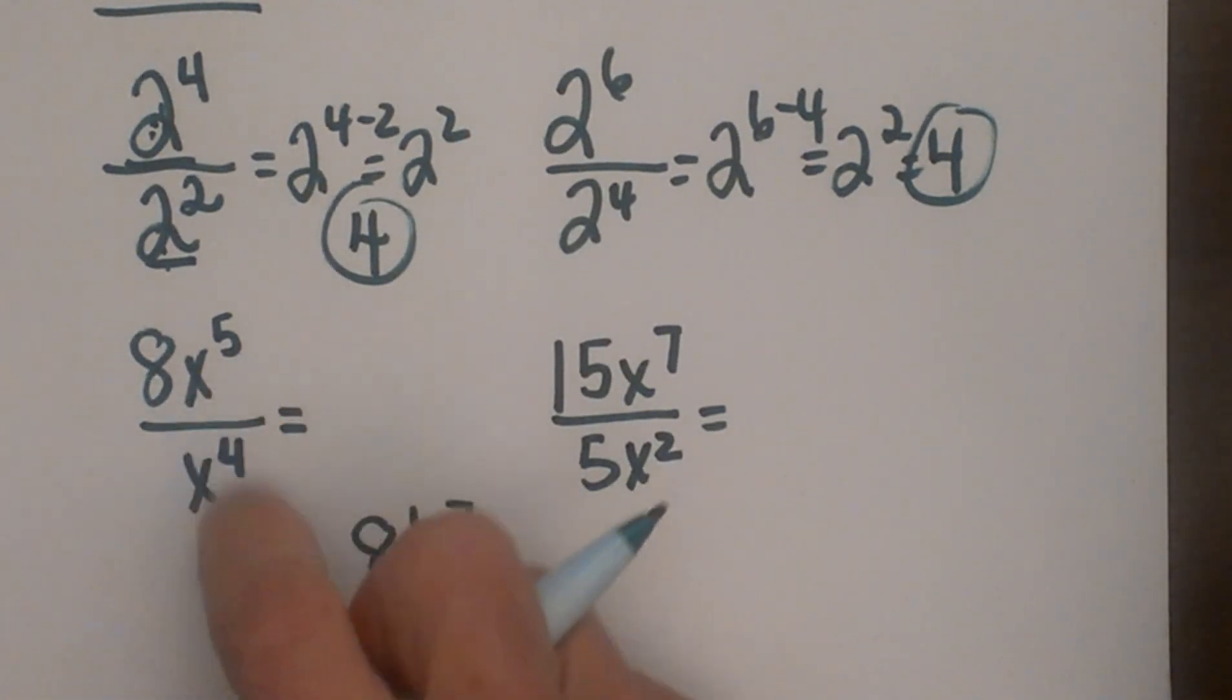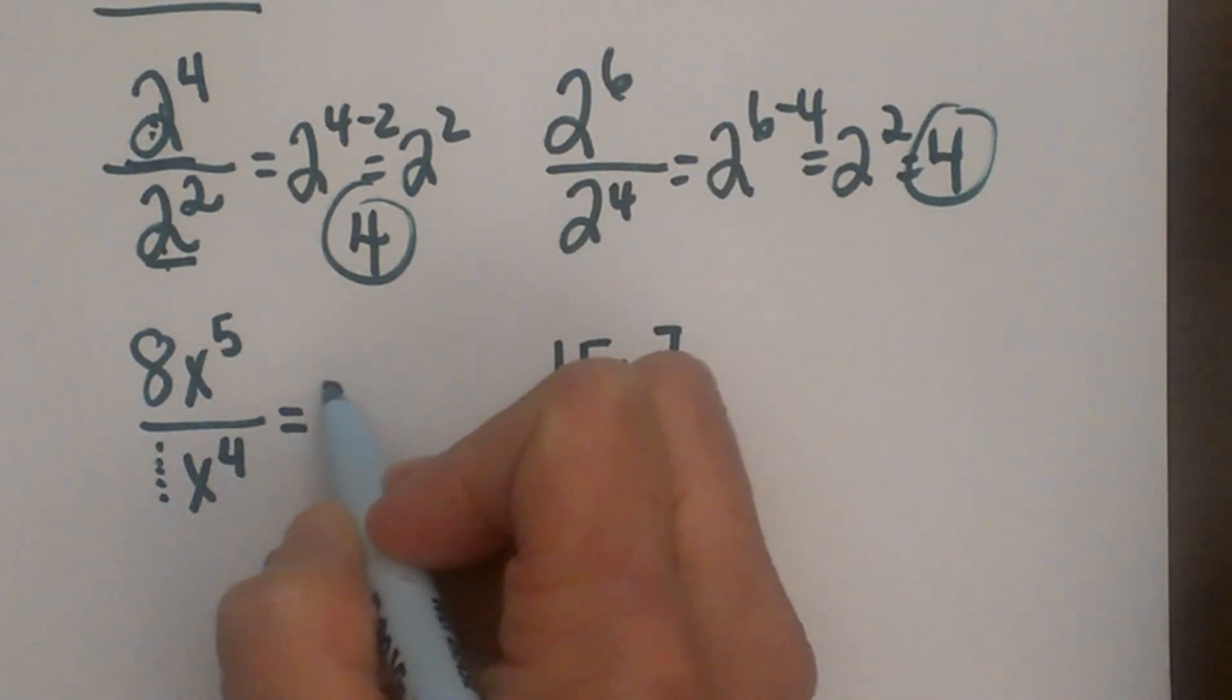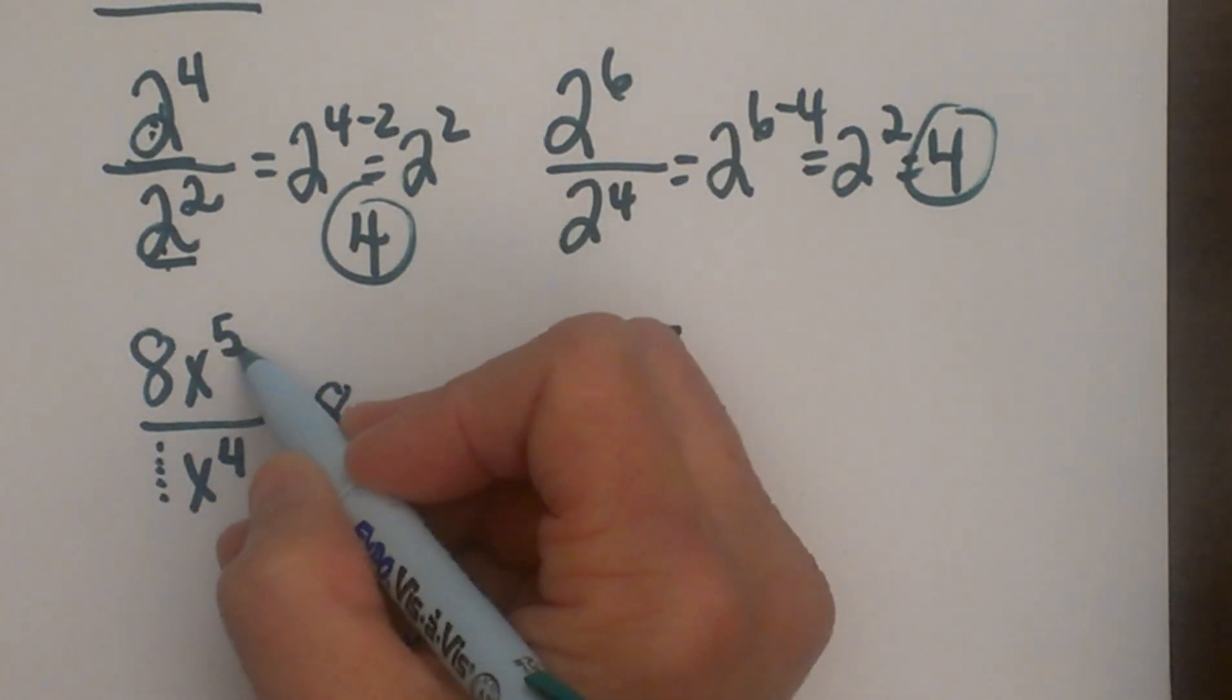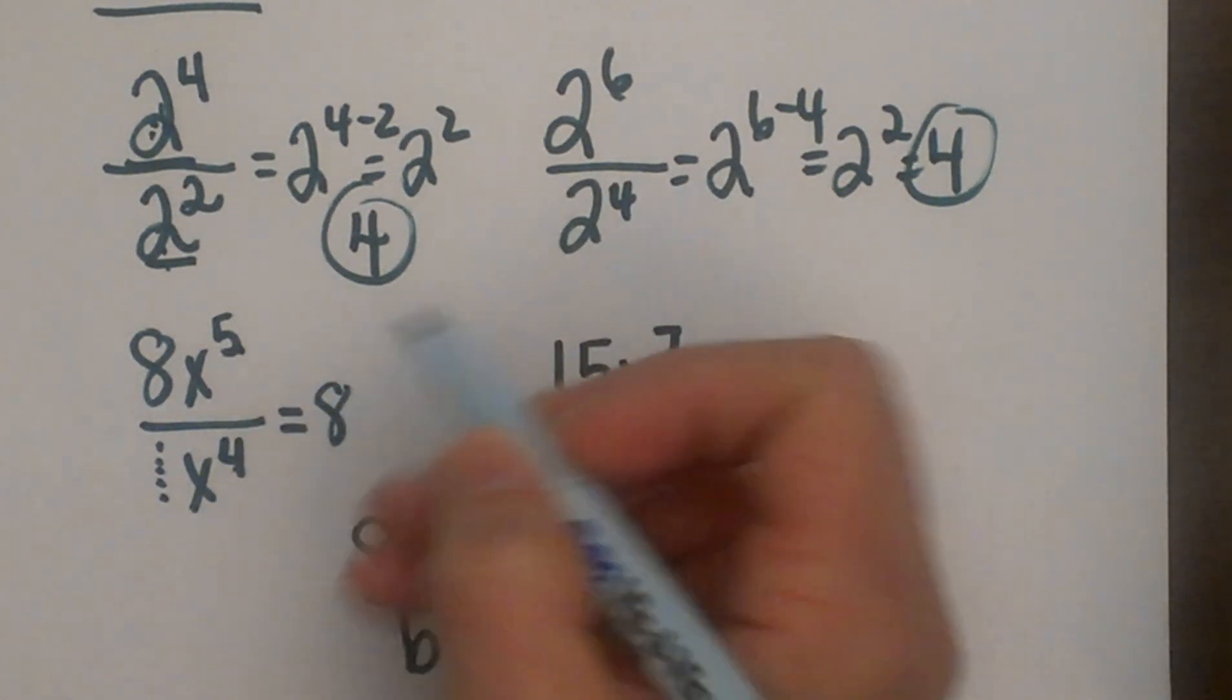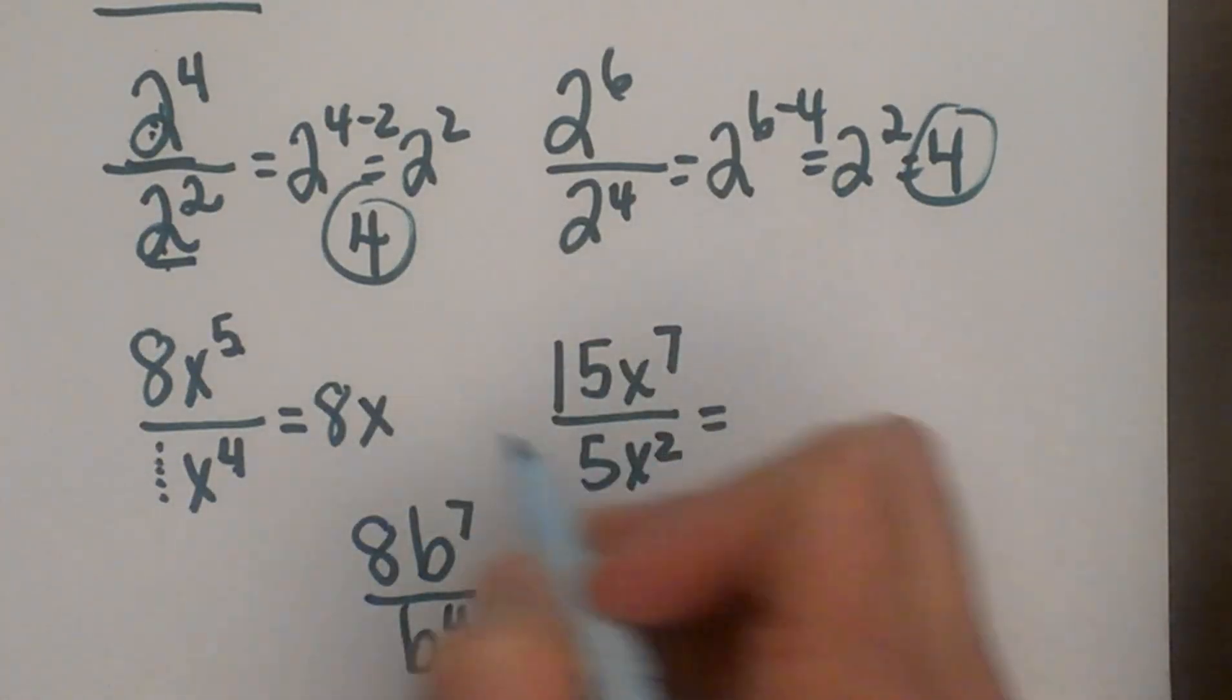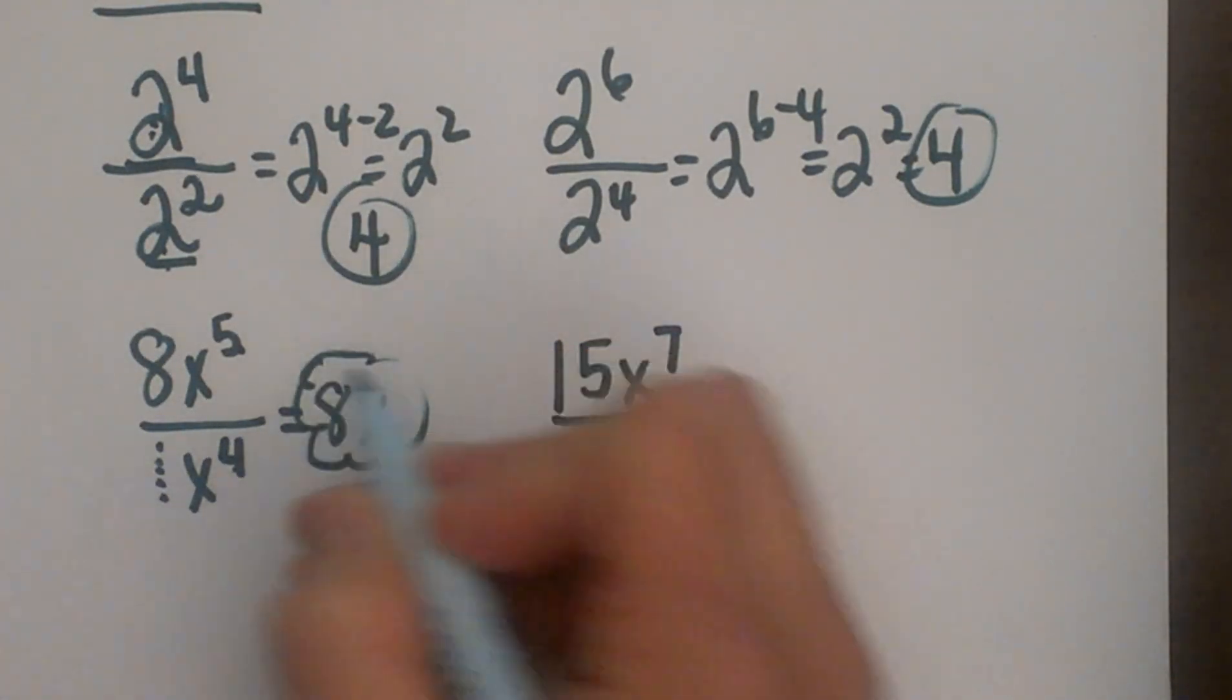Now let's look at ones with variables. We have 8x to the 5th divided by x to the 4th. Since we don't have a coefficient to divide here, we say 8 divided by our invisible 1 is still 8. Then x to the 5th divided by x to the 4th is x to the 1st power. So there's our answer for that one.